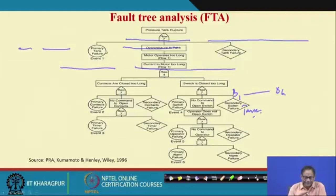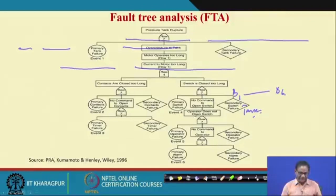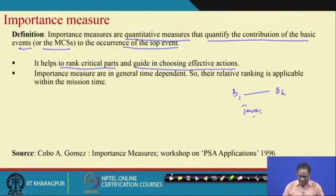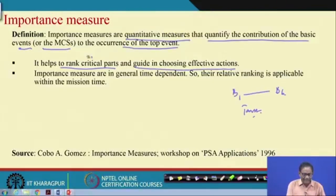What are the critical parts here? The tank is one, the contact another, the timer another, the pressure switch, and the alarm. Which one of these — the contact, switch, alarm, or tank — is the most critical? You may be interested to know which is the critical part so you can take action against failure of those critical parts. Importance measures are generally time-dependent.